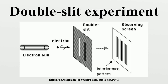The modern double-slit experiment is a demonstration that light and matter can display characteristics of both classically defined waves and particles. Moreover, it displays the fundamentally probabilistic nature of quantum mechanical phenomena. A simpler form of the double-slit experiment was originally performed by Thomas Young in 1801, who believed it demonstrated that the wave theory of light was correct. His experiment is sometimes referred to as Young's experiment or Young's slits.